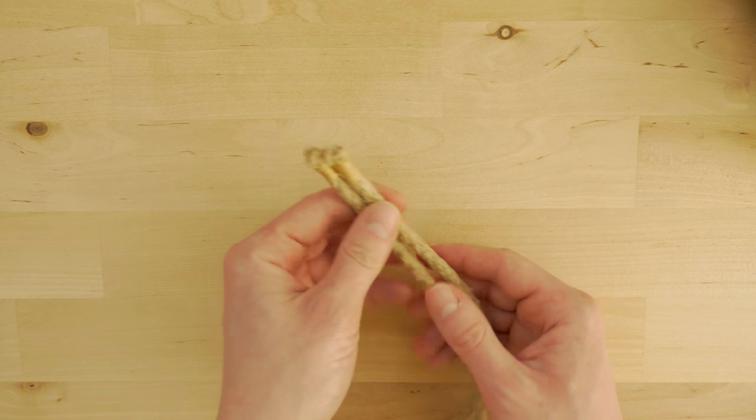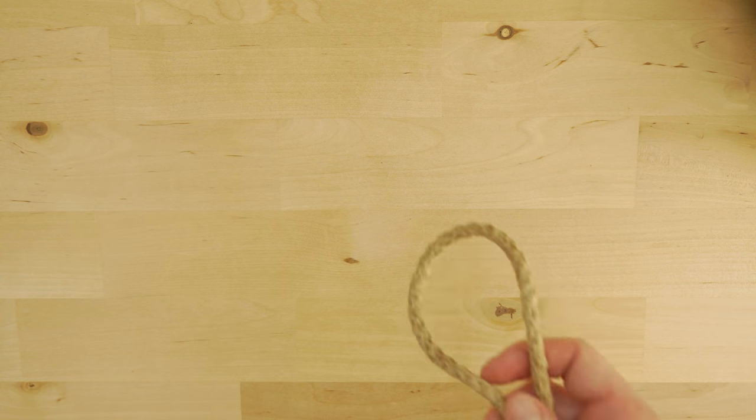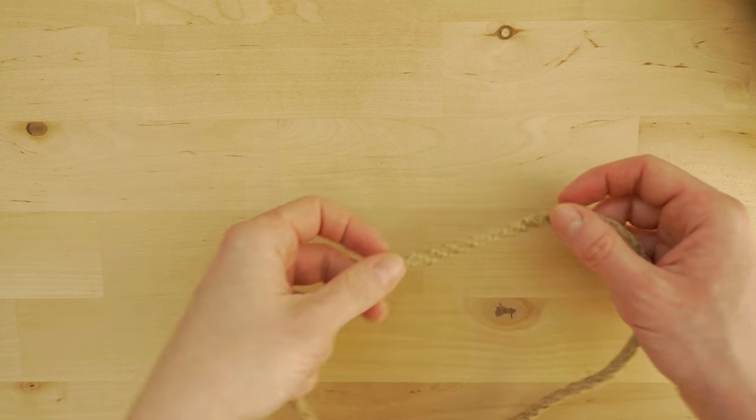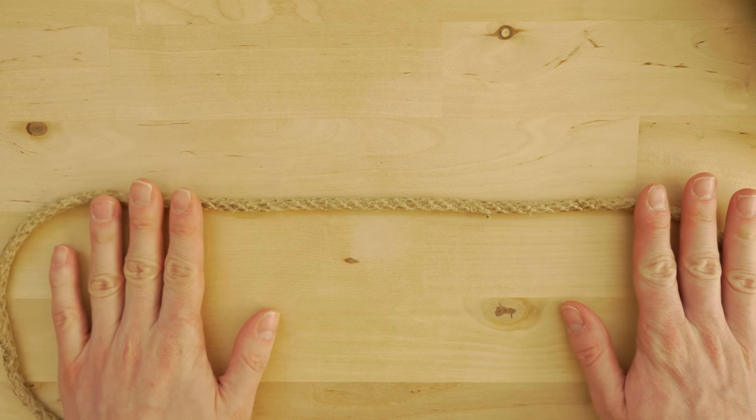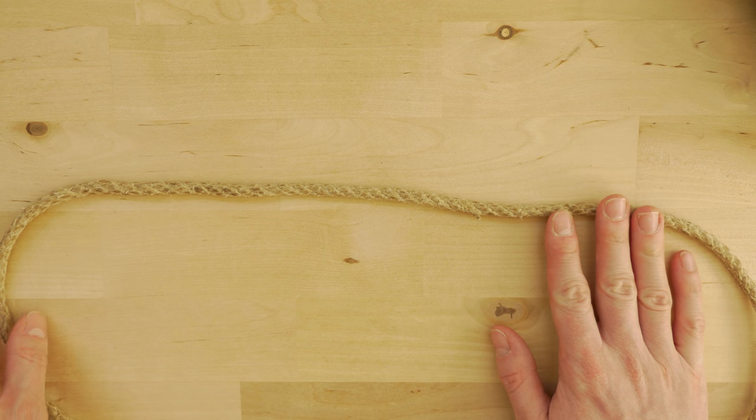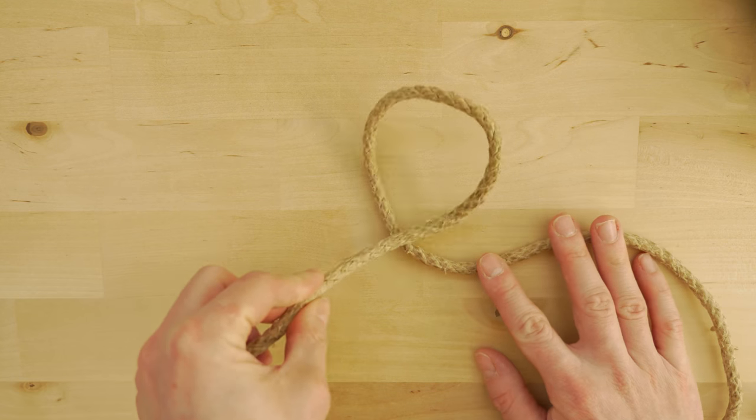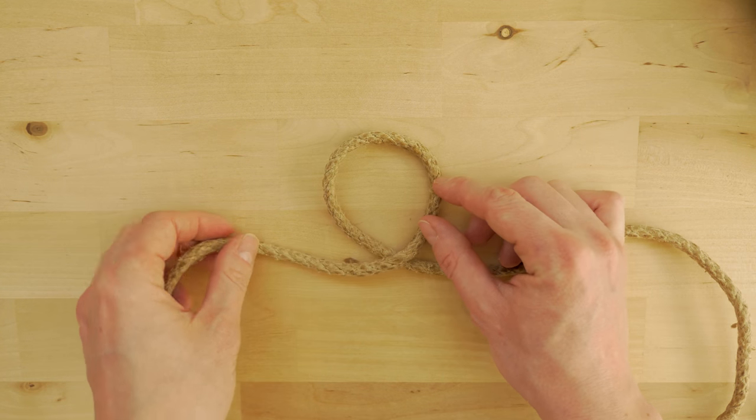Once you have prepared your rope, it is time to fold it in half. Find the middle point in your rope and place it horizontally. Take your left end and twist it, basically creating a loop.